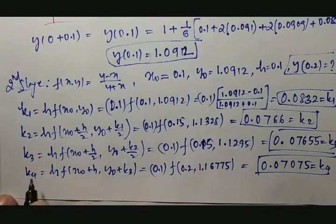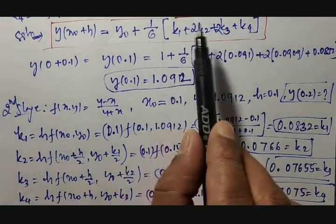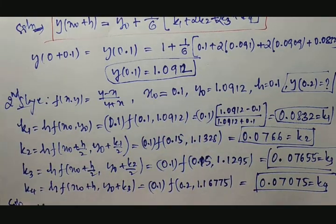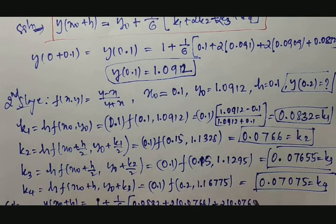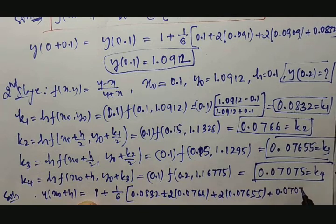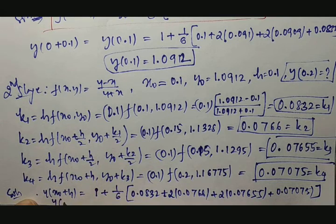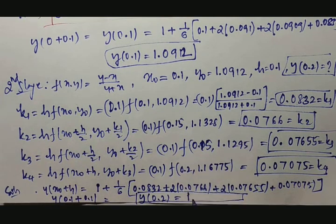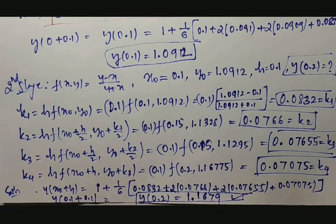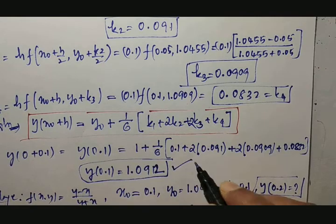Using the same formula, y(0.2) = y₀ + (1/6)(k1 + 2k2 + 2k3 + k4) = 1.0912 + (1/6)(0.0832 + 2·0.0766 + 2·0.07655 + 0.07075) = 1.1679. So the value of y(0.2) obtained using the Runge-Kutta fourth-order method is 1.1679, completing both stages of the solution.